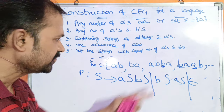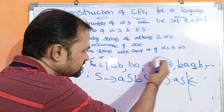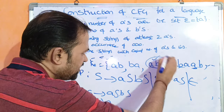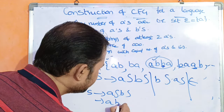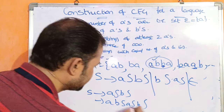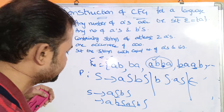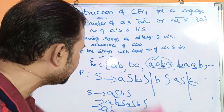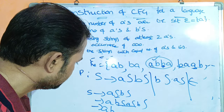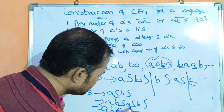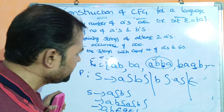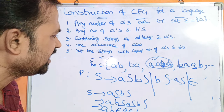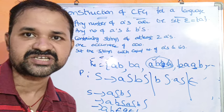Also S implies B S A S (string starting with B with corresponding A), or epsilon for termination. Let us verify by deriving ABBA: S implies A S B S. For S we take B S A S, giving A B S A S B S. Substituting epsilon for remaining S's: A B epsilon A epsilon B epsilon = A B A B... adjusting: we can derive any such string. In this way we can construct a context-free grammar for a language with equal numbers of A's and B's.